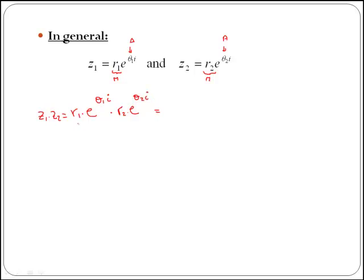In order to multiply, we will multiply numbers with numbers, so we have r1 times r2. And then for the exponentials, we treat them as the multiplication of two powers. Therefore, the answer will be e to the power of the addition of the exponents, so we have θ1i plus θ2i.